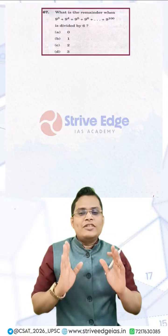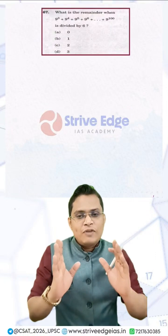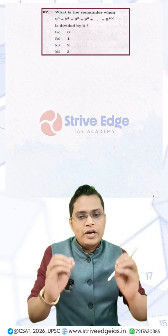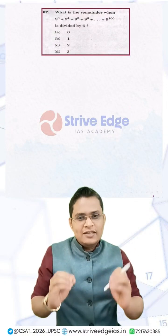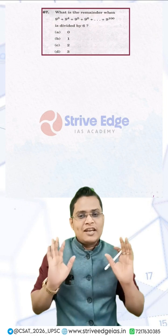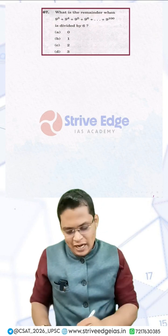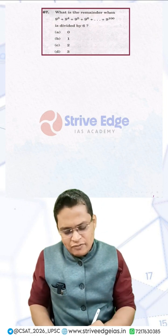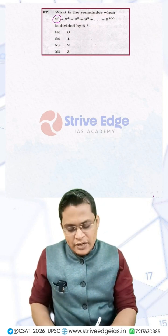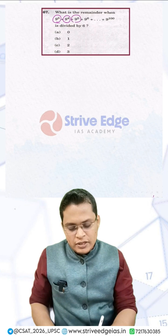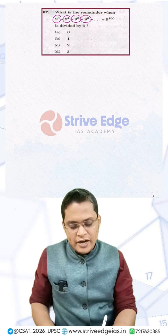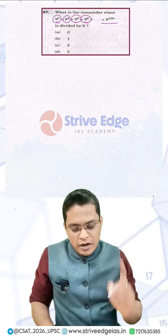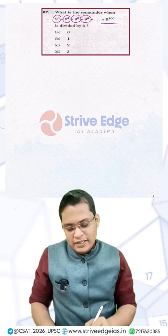UPSC questions are always one step ahead of what students are preparing. This question is a classic example of that. The question is: what is the remainder when 9³ + 9⁴ + 9⁵ + 9⁶ up to 9¹⁰⁰ is divided by 6?